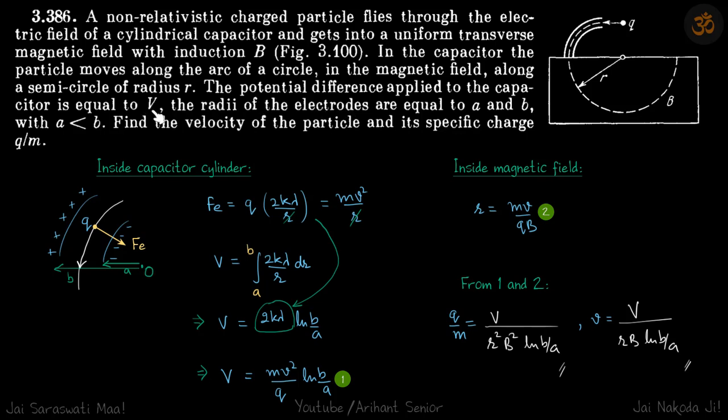Now they've given the potential difference of the capacitor. So if we integrate from A to B, E dot DR, then we get the potential difference between these two points.